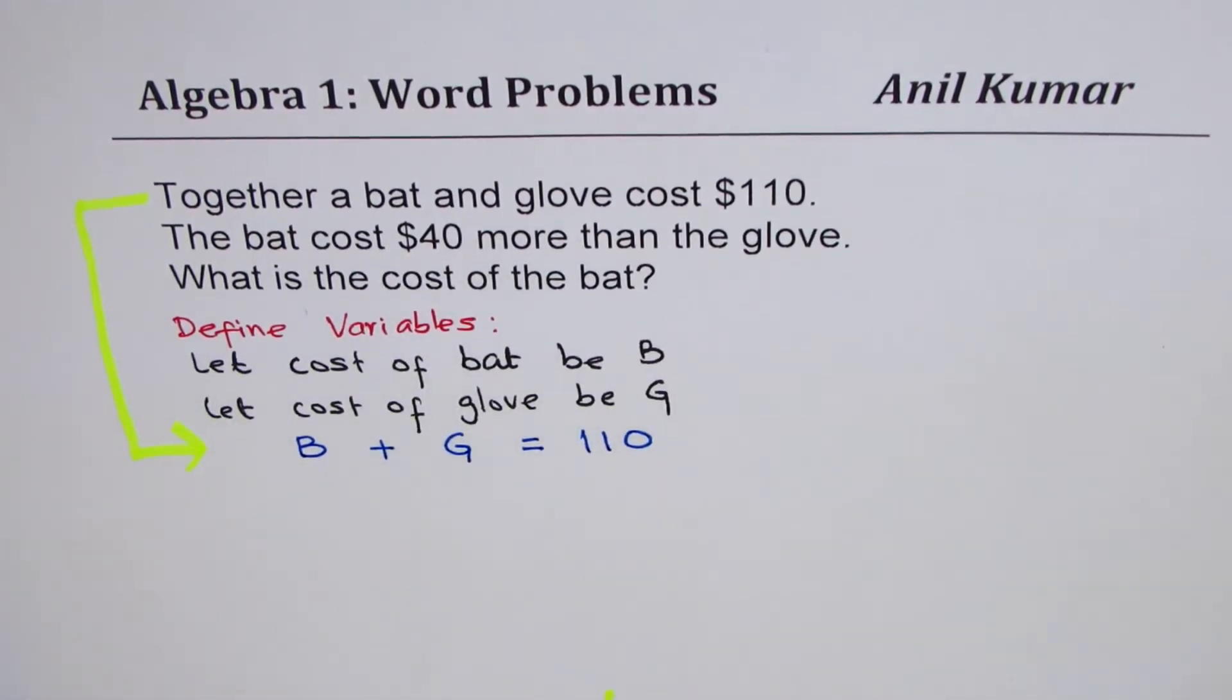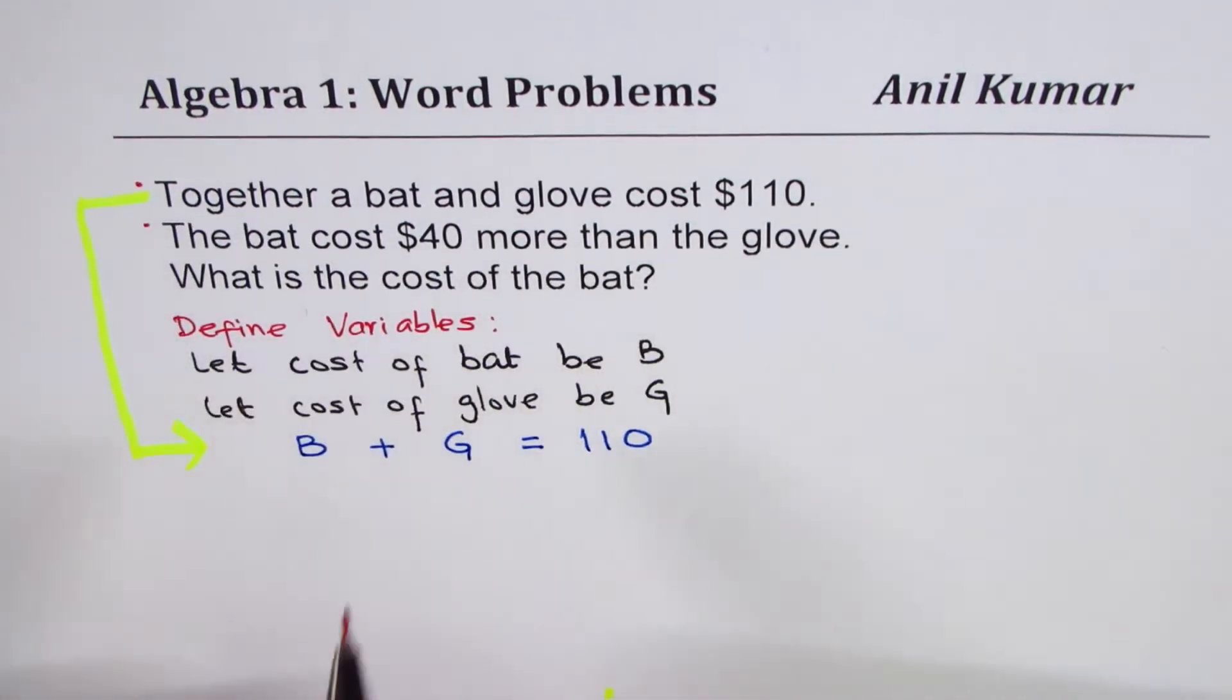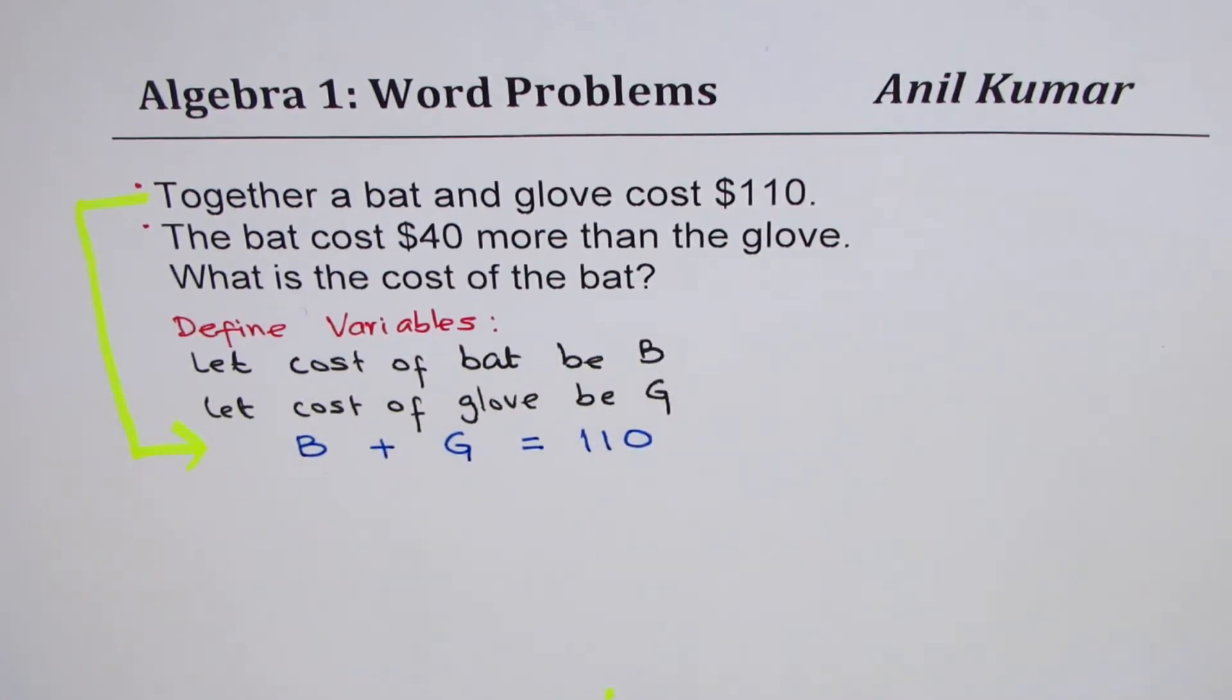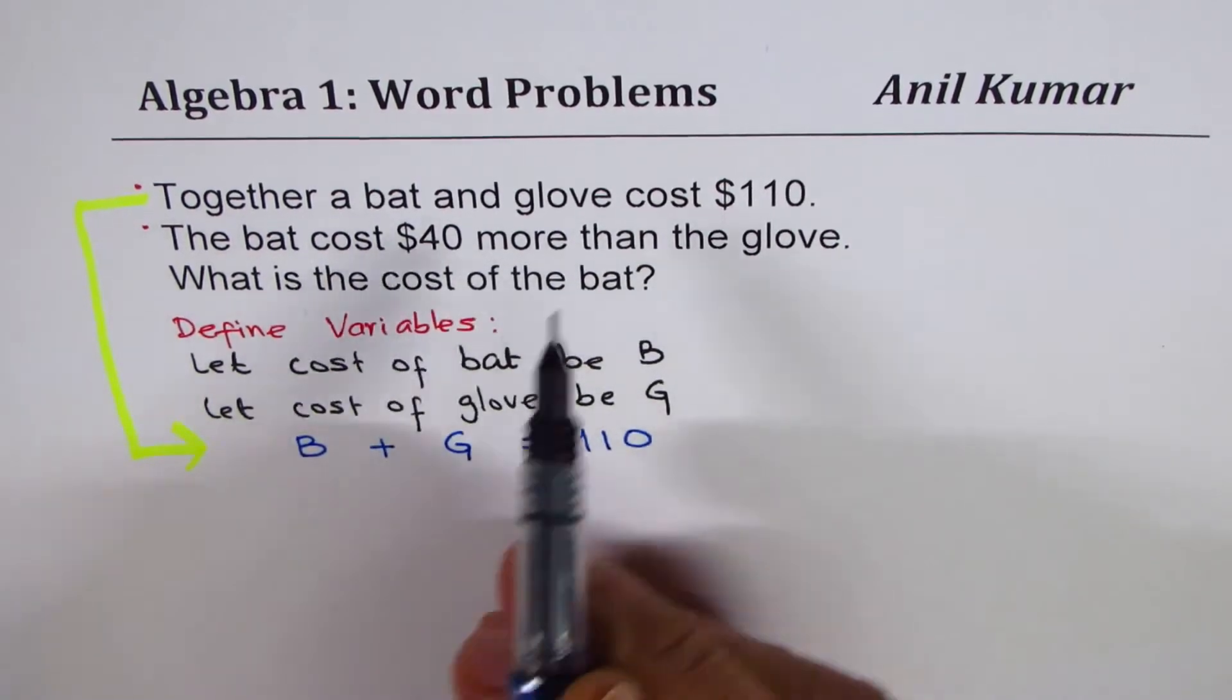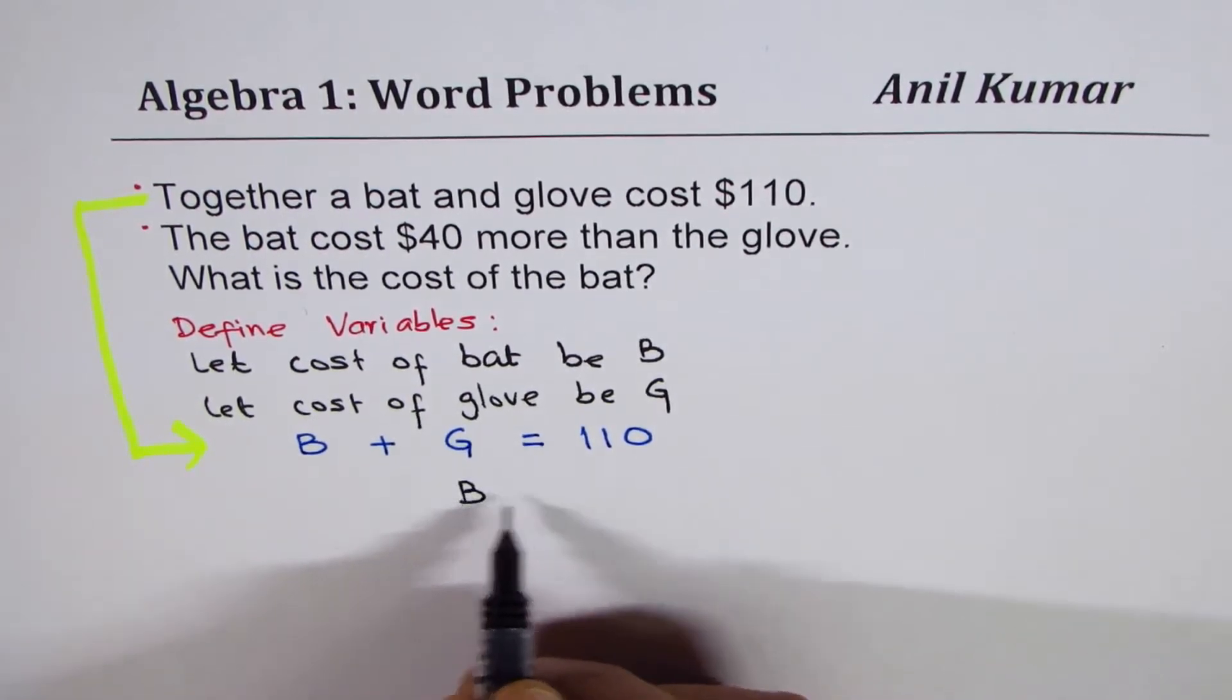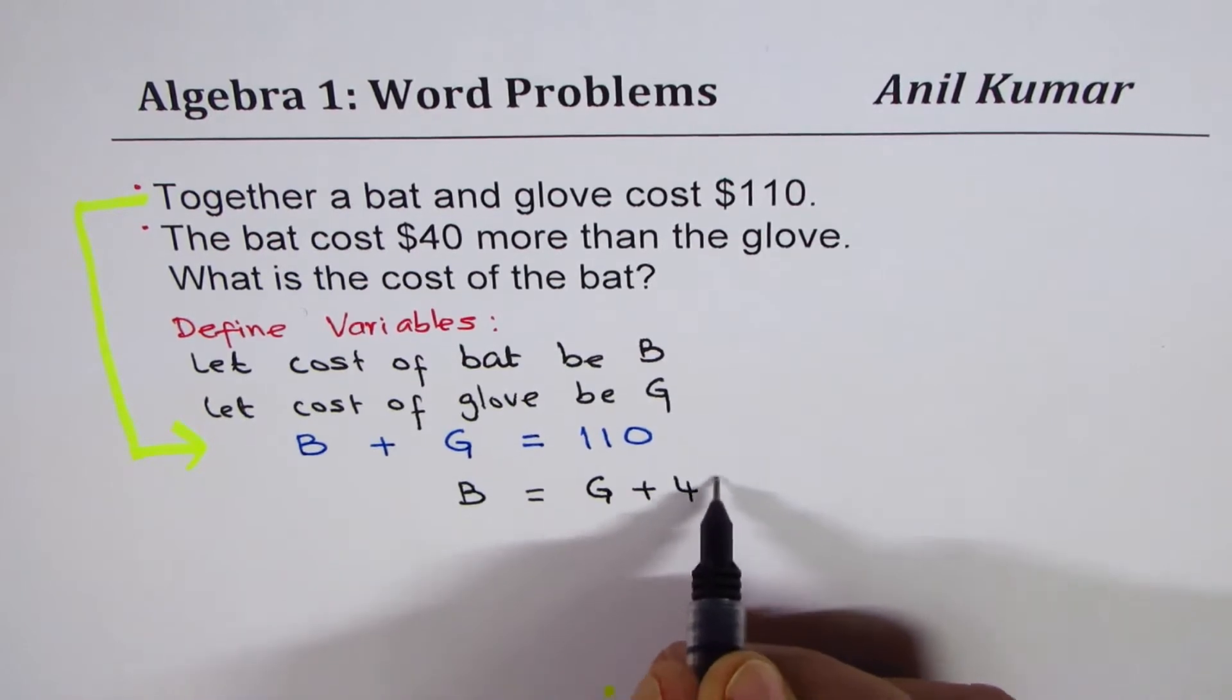Now, let's look into the second statement here. The bat costs $40 more than the gloves. That means the cost of the bat is more expensive. It costs 40 more than gloves. So, the cost of the bat is cost of the gloves plus 40. Does it make sense to you?